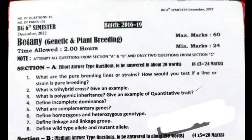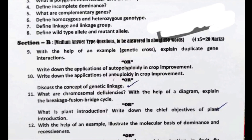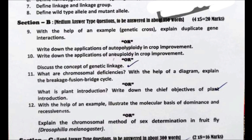This syllabus is functional from 2016, meaning it is for students of batches 2016 to 2019, also for 2020 and 2021. Maximum marks are 60 and minimum marks are 24. Section A has 8 short answer type questions, and Section B has 4 medium answer type questions with internal choice.